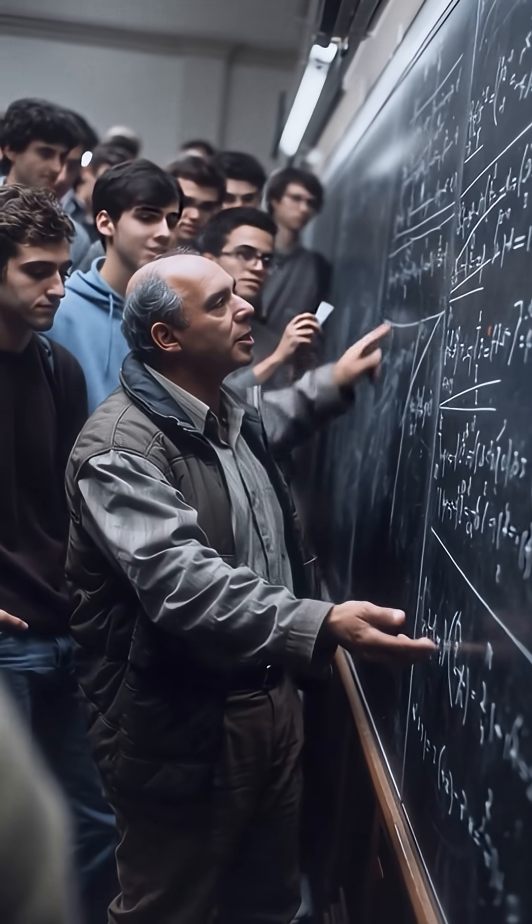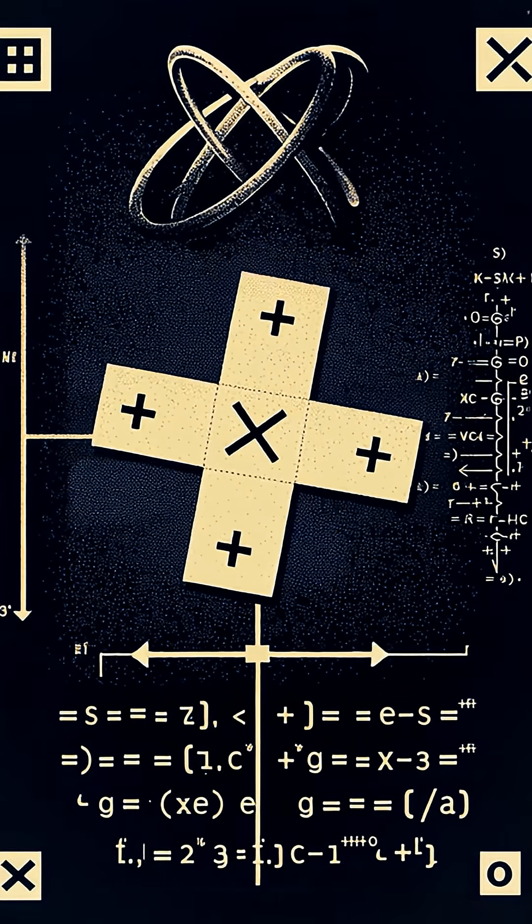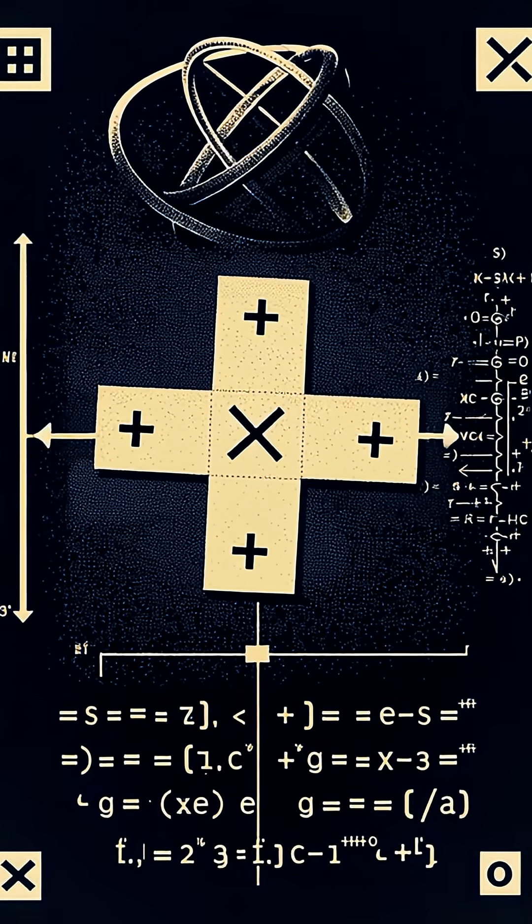which forbids making perfect copies of an unknown quantum state and protects core principles like the uncertainty principle and causality.